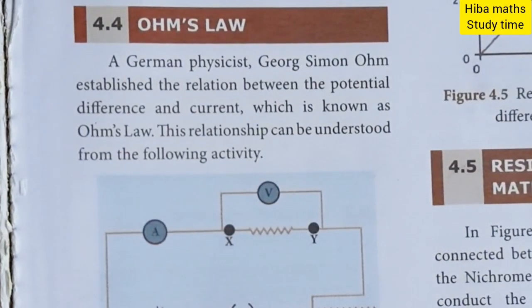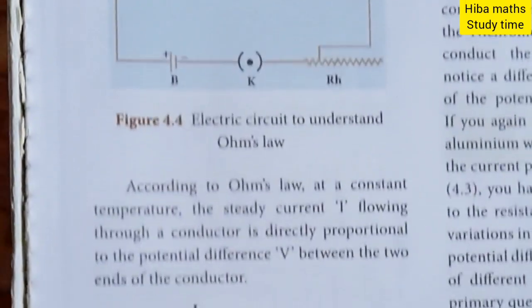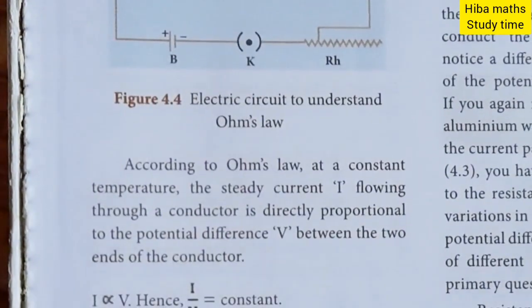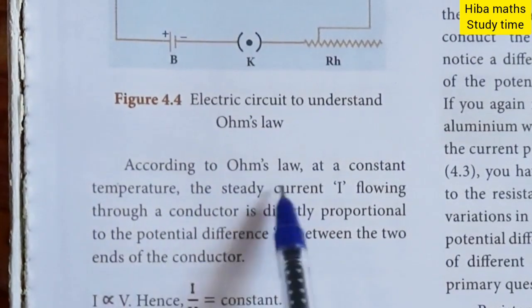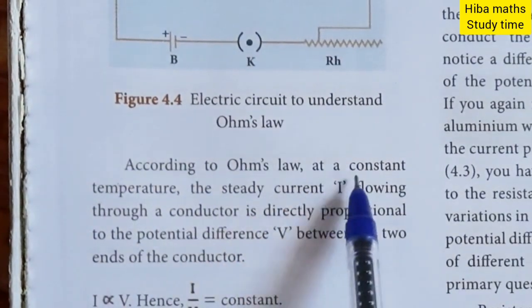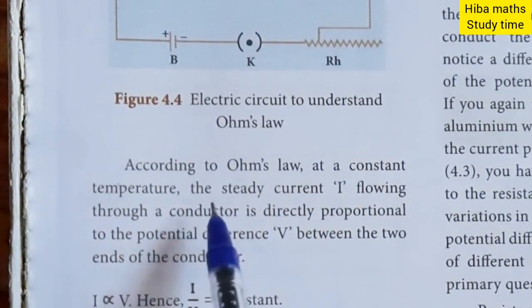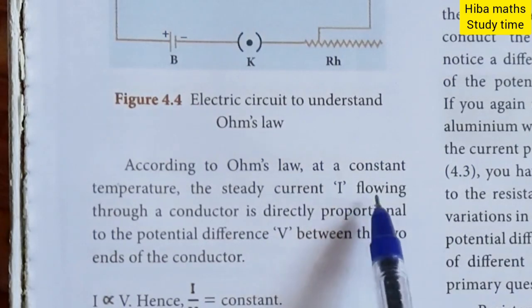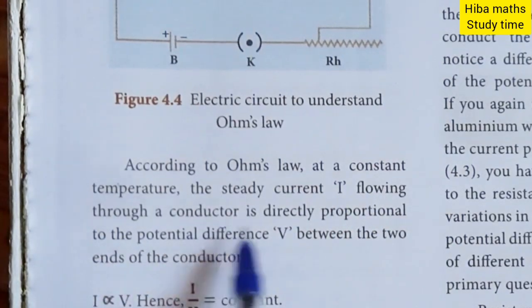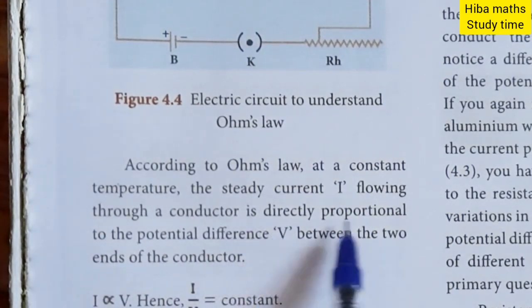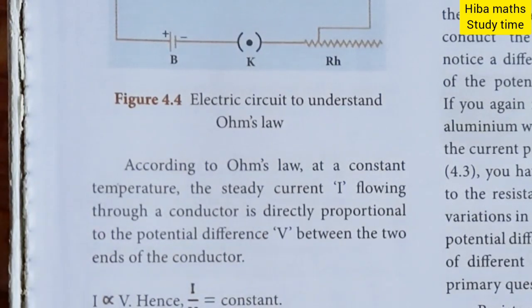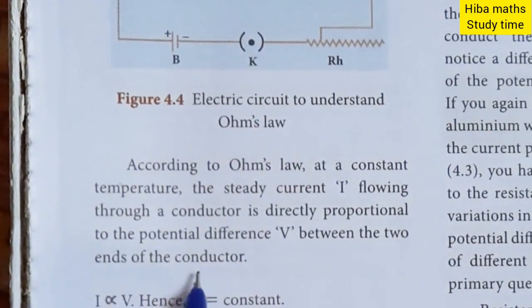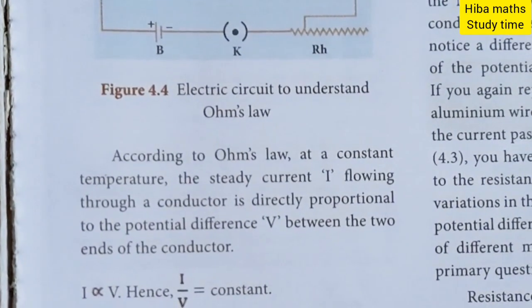We will state Ohm's Law. According to Ohm's Law, at a constant temperature, the steady current I flowing through a conductor is directly proportional to the potential difference between two ends of the conductor. This is our definition.